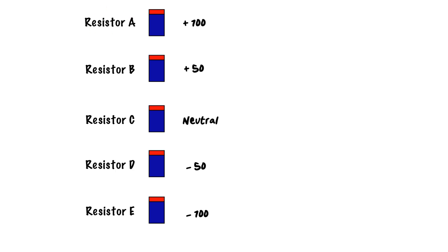I could do the same thing all the way down. Resistor D is positive with respect to resistor E because it is less negative — negative 50 as opposed to negative 100. Or I could say resistor E is negative with respect to resistor D because it is more negative. I could also say that resistor B is positive with respect to resistor D by 100, because we have 50 on one side and 50 going the other way — there's a 100 electron difference between the two of them. So B is positive by 100 with respect to D, or D is negative by 100 with respect to B. It all comes down to your reference point — which point is your reference determines whether something has a positive or a negative charge.